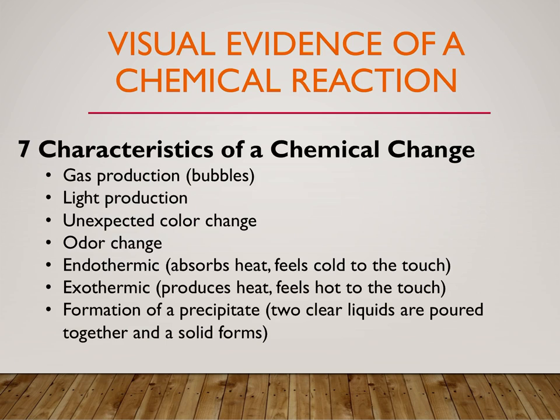The next characteristic is light production — that one's really cool. If you've ever lit magnesium, it will produce a really bright light. The next one is unexpected color change. We do a cool copper lab where the copper goes through different color changes — it goes from red to blue to green to black — because the copper is changing its oxidation state, and that would be an unexpected color change. By unexpected, I mean: if you put blue food coloring in water, you'd expect the water to be blue — that's not an unexpected color change. But if the water turned green, that would be unexpected.